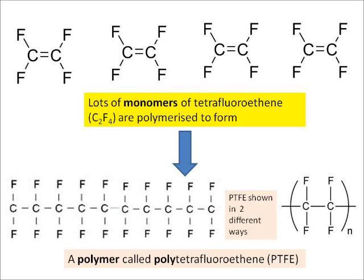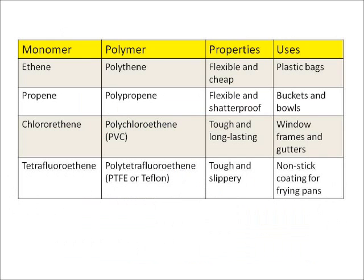You also need to know about two other examples, which are propene and chloroethene. You need to know about the properties and uses of four different polymers: polythene, polypropene, polychloroethene — otherwise known as PVC — and polytetrafluoroethene, otherwise known as PTFE.